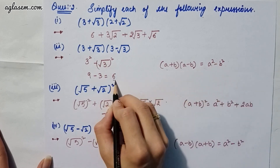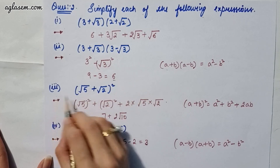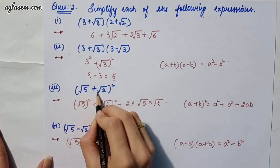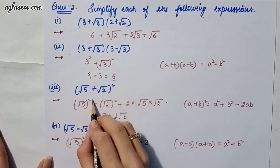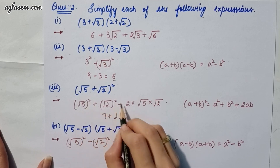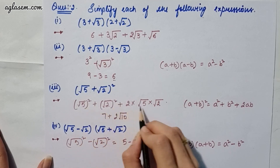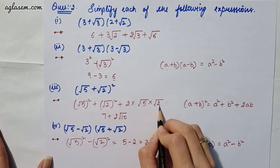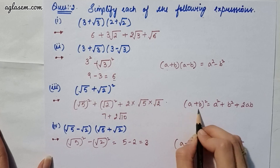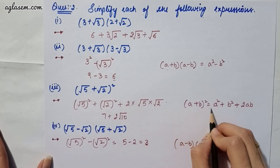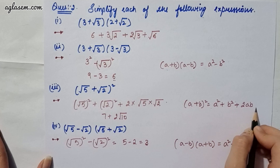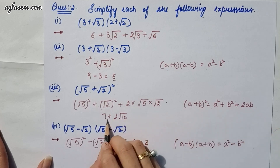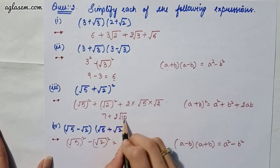So the answer will be 6. Moving to our third part, which says root 5 plus root 2 whole square. So, root 5 whole square plus root 2 whole square plus 2 into root 5 into root 2. That is the (a plus b) whole square formula, which gives you a squared plus b squared plus 2ab. So the answer will be 7 plus 2 root 10.